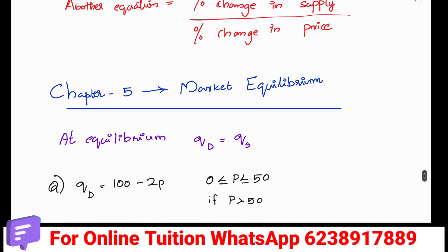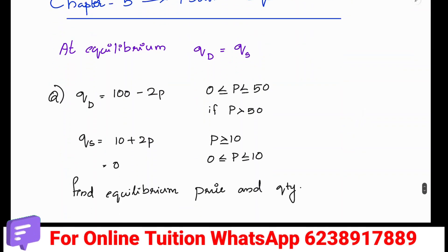Now let's look at market equilibrium. In market equilibrium the key condition is QD equals QS, where QD is quantity demanded and QS is quantity supplied. To solve an equilibrium problem, we take equations for QD and QS. For example, QD equals 100 minus 2P and QS equals 10 plus 2P.